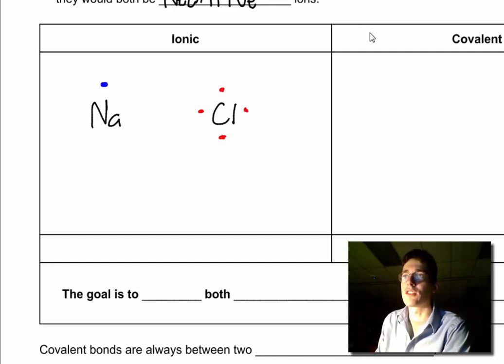You could put a dot on each side and then we start pairing up. So chlorine's got four, five, six, seven valence electrons around its outside.